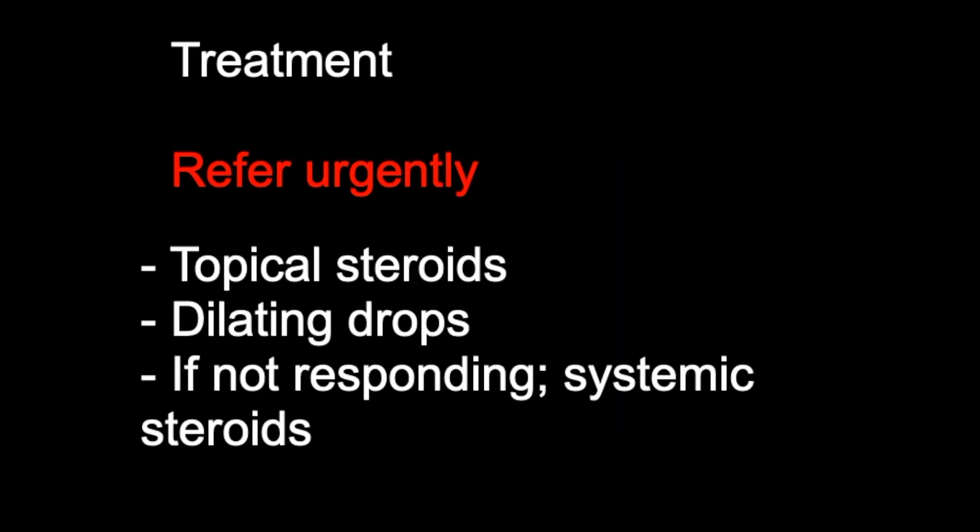Let's finish by looking at treatment options for anterior uveitis. If you're in general practice or the community and you suspect anterior uveitis, refer the patient urgently to a specialist eye doctor. The first line of treatment is likely topical steroids — such as prednisolone acetate 1% one drop every hour whilst awake — combined with dilating drops and anti-inflammatory drugs. The dilating drops may blur vision and increase light sensitivity, but by relaxing the iris muscles the eye will become much more comfortable.